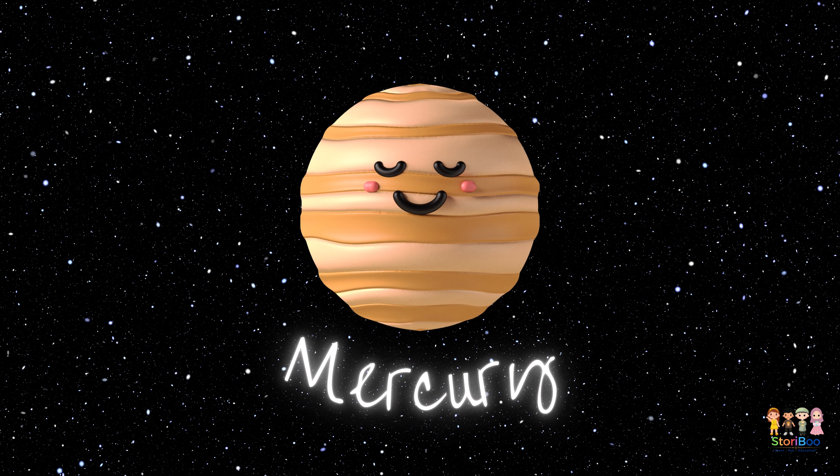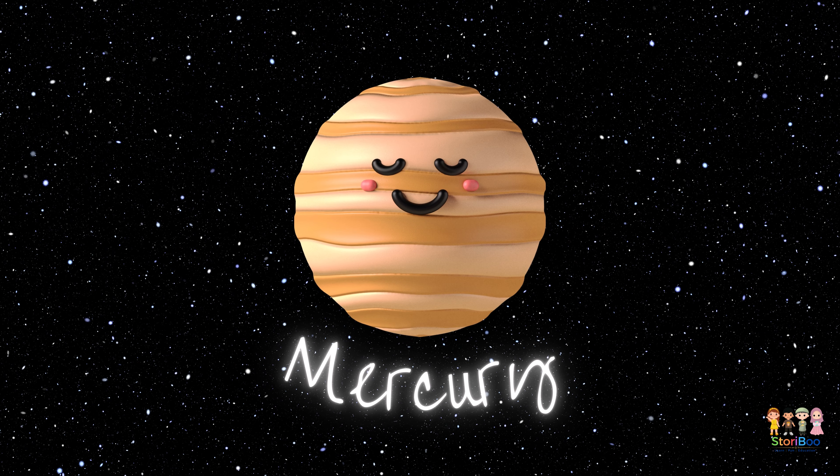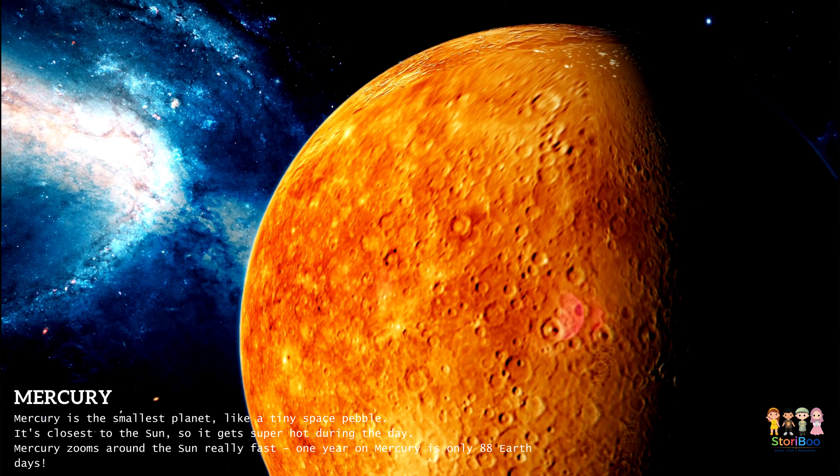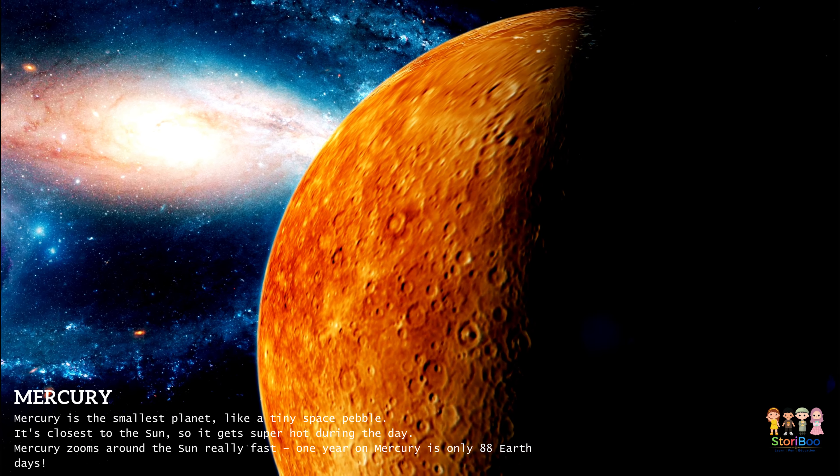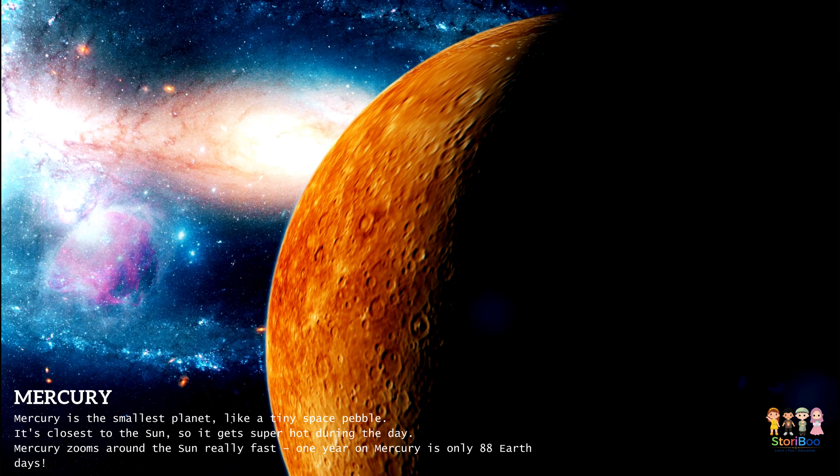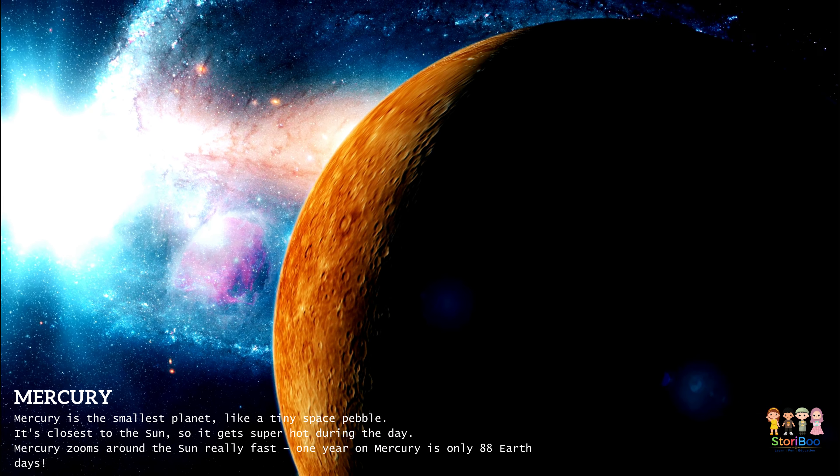Mercury is the smallest planet like a tiny space pebble. It's the closest to the sun, so it gets super hot during the day. Mercury zooms around the sun really fast. One year on Mercury is only 88 Earth days.